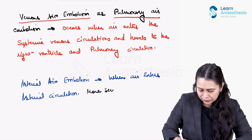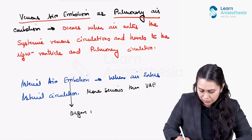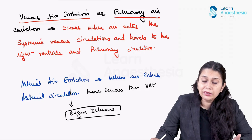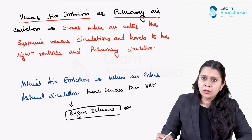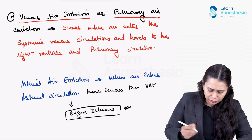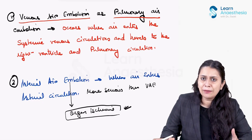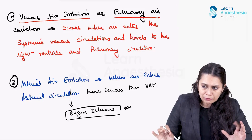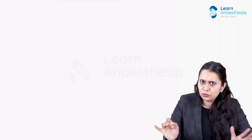Arterial air embolism can cause organ ischemia depending upon which artery supplying an organ is affected. Now we need to understand why air embolism happens. Air is present in the atmosphere — how would it get embolized into the vasculature? For air embolism to happen, two conditions must be fulfilled, which I will explain with an example.